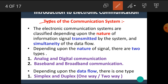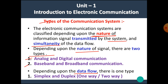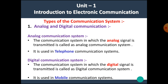The electronic communication systems are classified depending upon the nature of the information signal transmitted by the system, and the simultaneity of the data flow. Depending upon the nature of the signal, there are two types: first, analog and digital communication system, and second, baseband and broadband communication system. Depending upon the data flow, there is simplex and duplex communication system, also called one-way or two-way communication system. Let's see each type one by one.